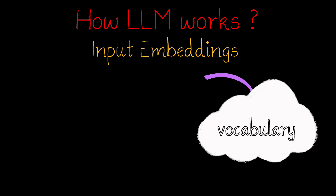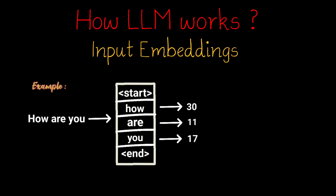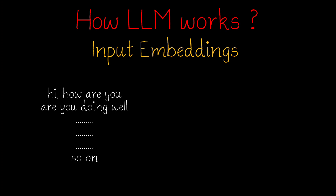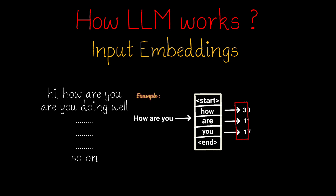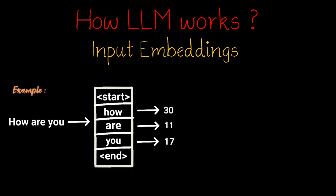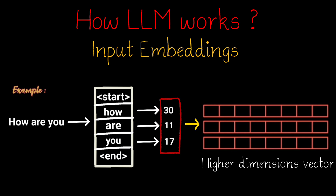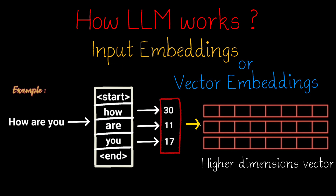Each word in the sentence will be represented with an index number by making use of a vocabulary. Vocabulary is a place where all the words from the training data are mapped with a unique index number. For small sentences, this index will be fine, but when it comes to large sentences, this representation by index will be a problem. For that reason, we need to normalize the index between 0 to 1. This index representation is then represented in a higher dimension vector, which is known as input embeddings or vector embeddings.